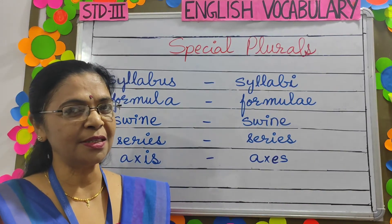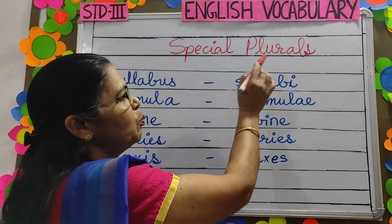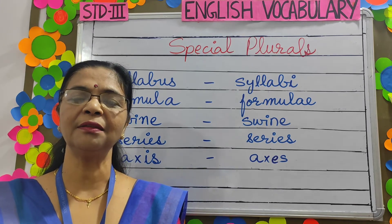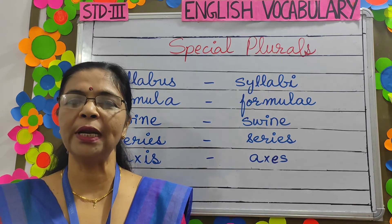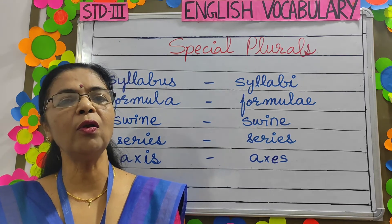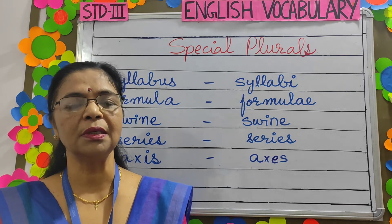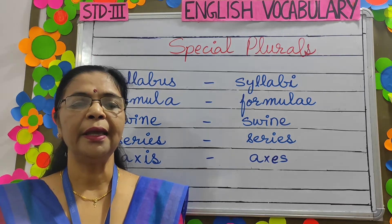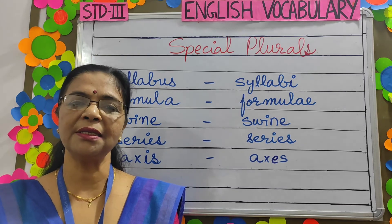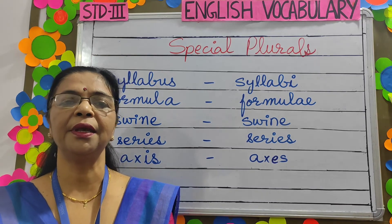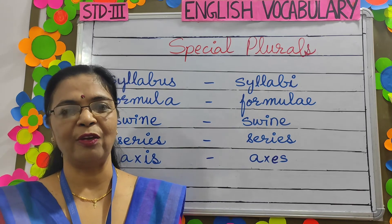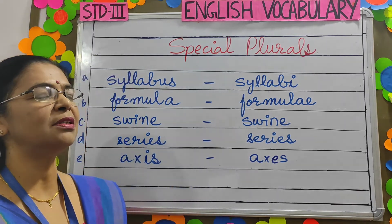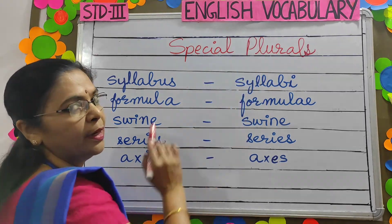Our next topic is special plurals. What are special plurals, children? Special plurals are irregular plurals — nouns that do not become plurals by adding S or ES as most nouns do in the English language. So let's see a few examples.